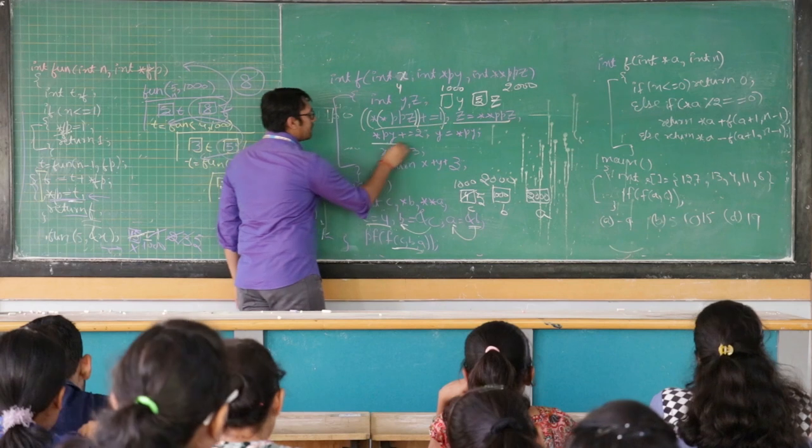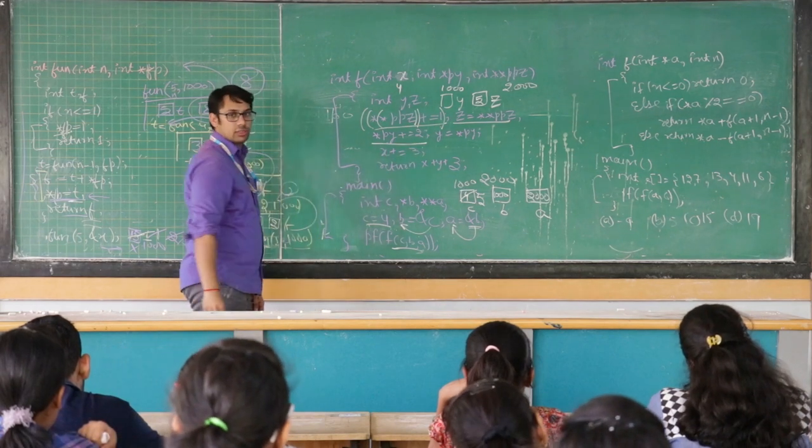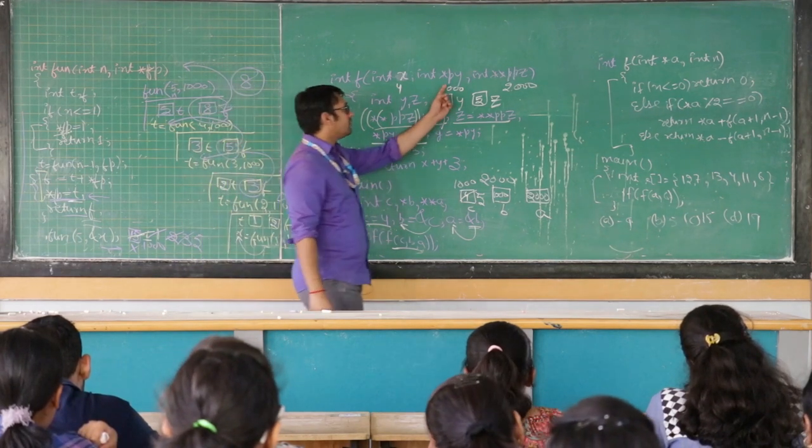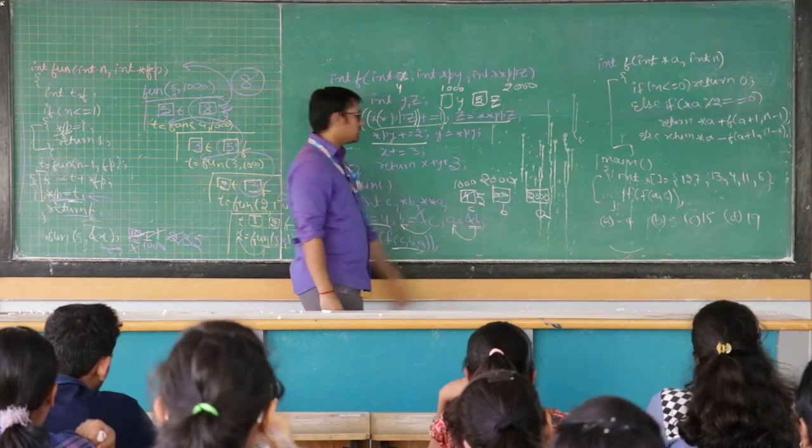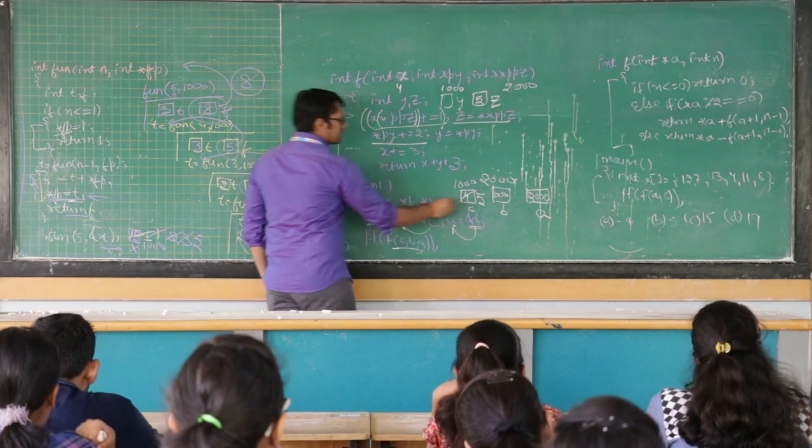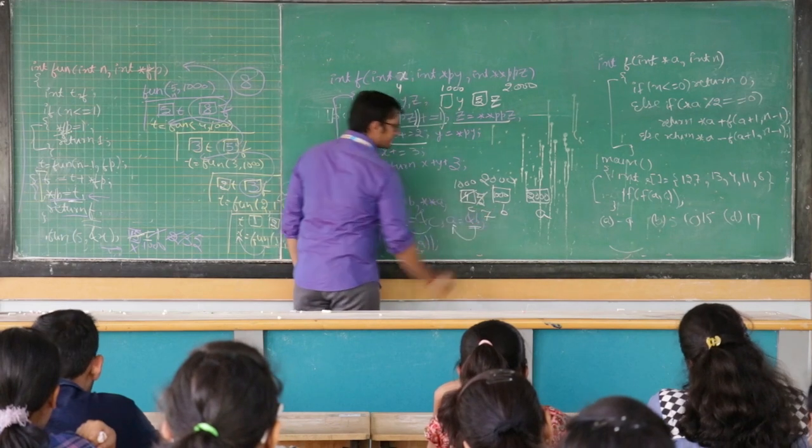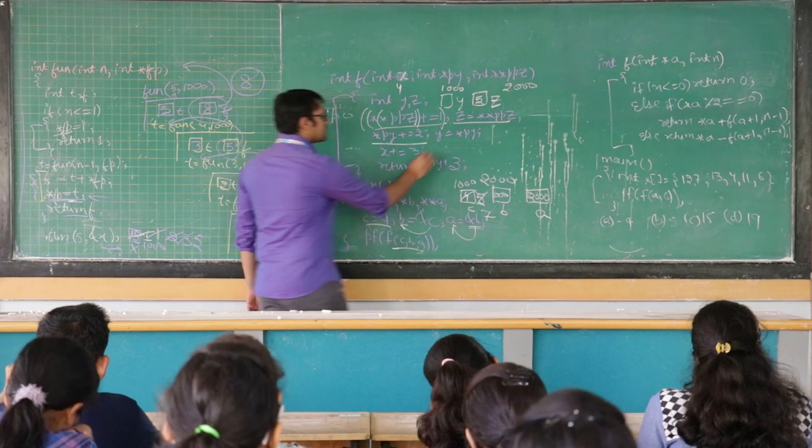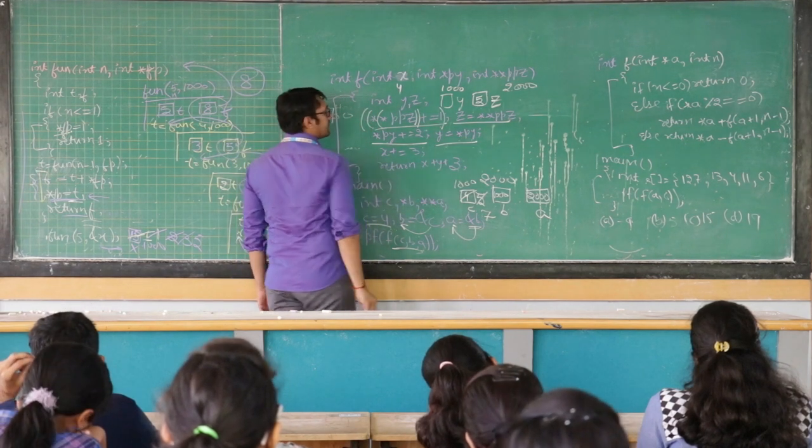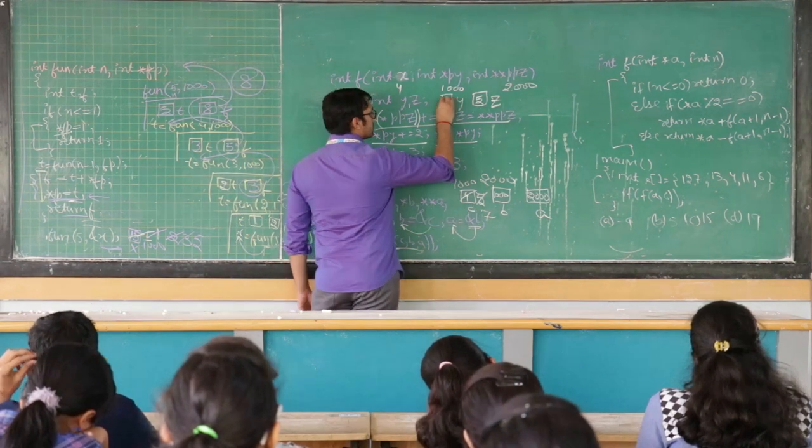Then we have star py plus equal to 2. So py is storing 1000, star of 1000 is value 5. So 5 plus 2 is 7 here. It is 7, and from this y is equal to star ppy, that means this value 7 is stored here.